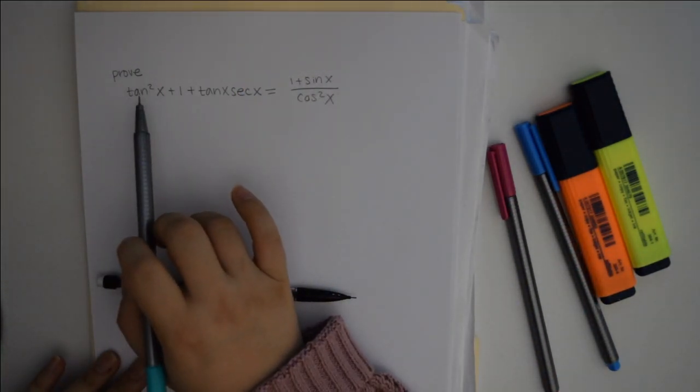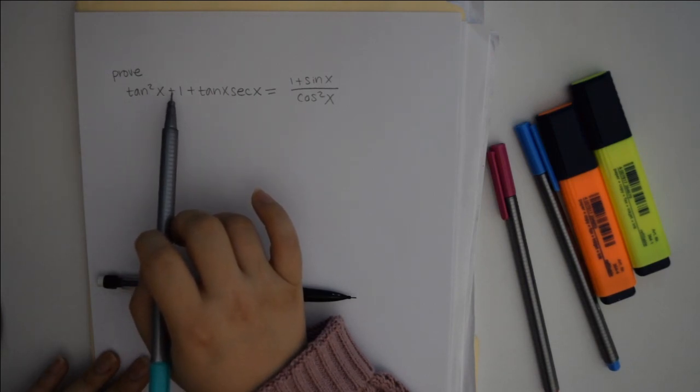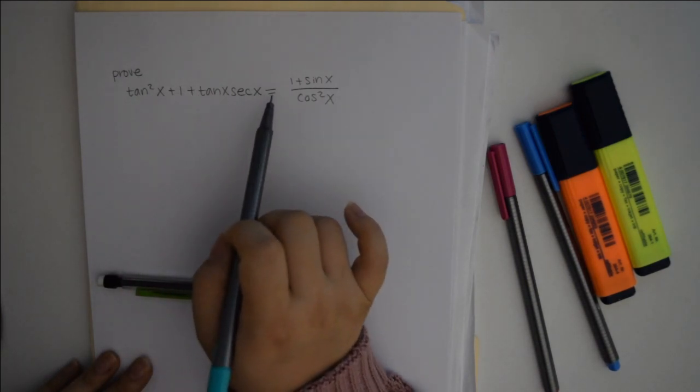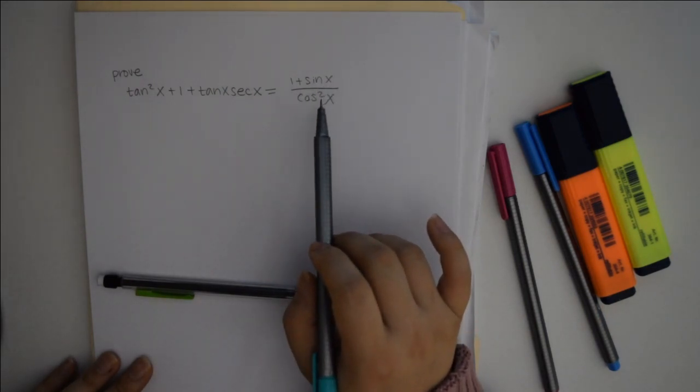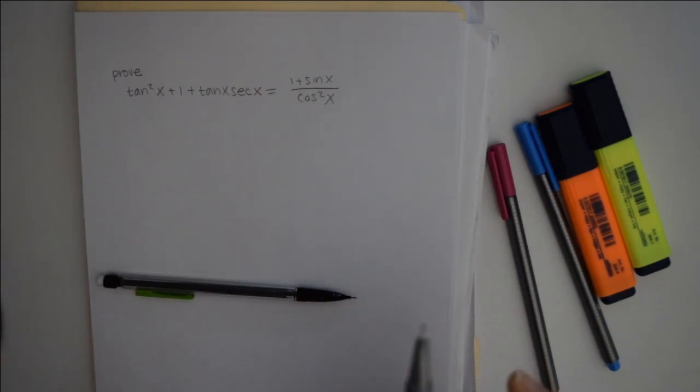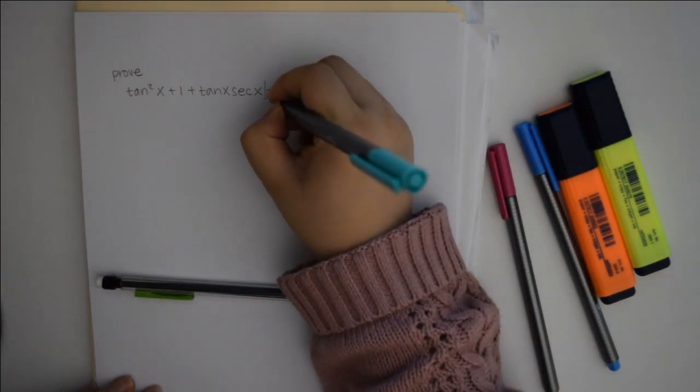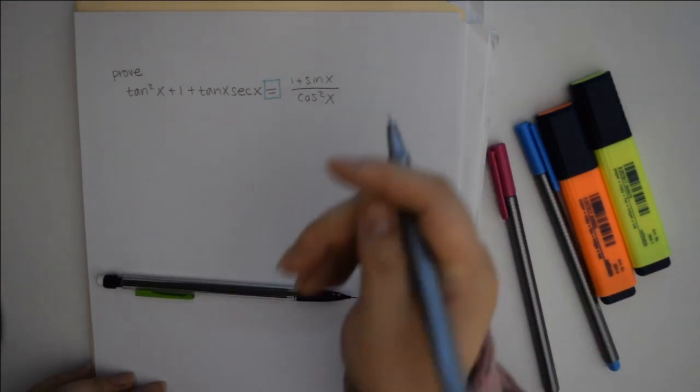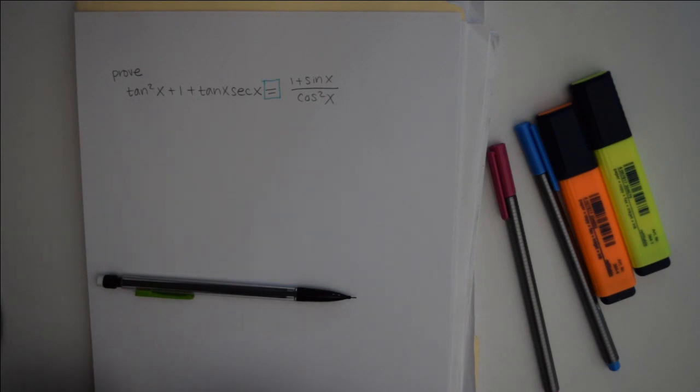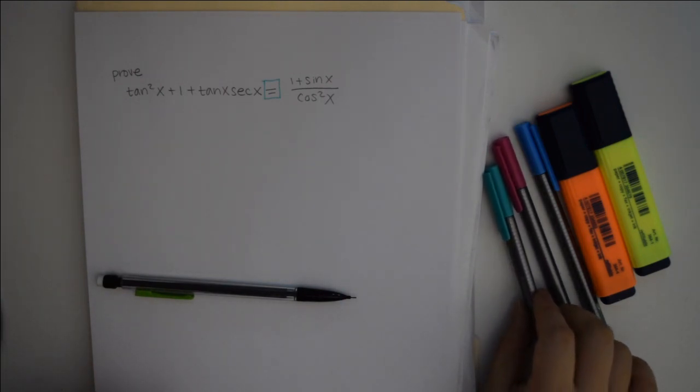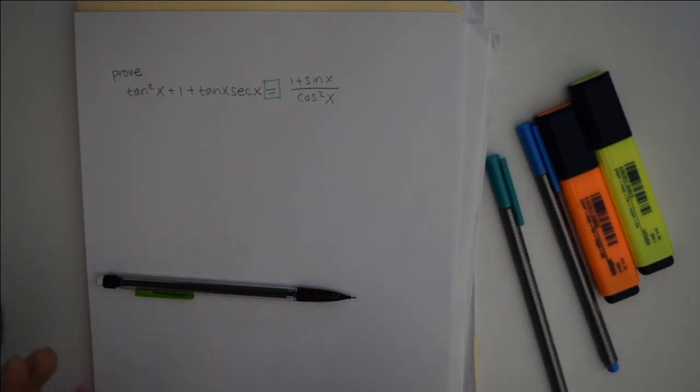So, we're going to prove that tangent squared x plus 1 plus tan x secant x equals 1 plus sine x all over cosine squared x. I am going to emphasize first, I'm going to highlight this equal sign. I think this is the most underrated thing in math. It's so simple, and I think it gets taken for granted, which is so sad, but it's so amazing.